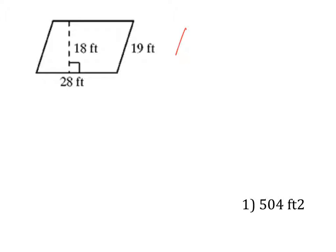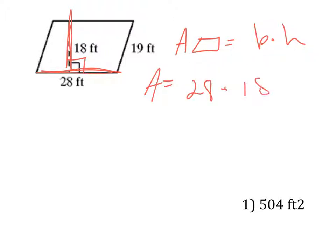So again, area of a parallelogram is base times height, and we're going to use this base, and this is the height because they're at 90 degrees to each other. So area is 28 times 18.